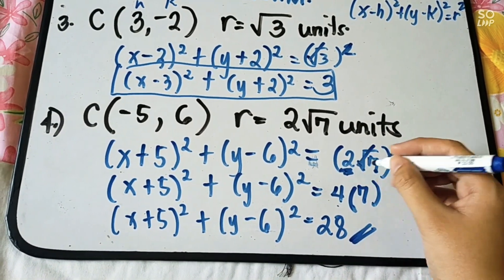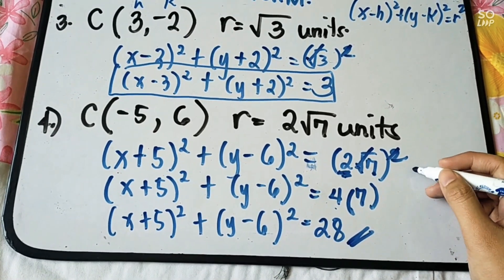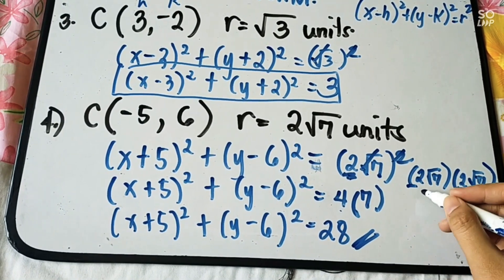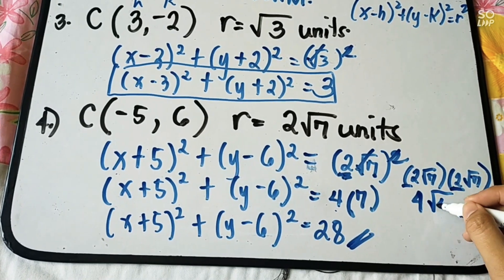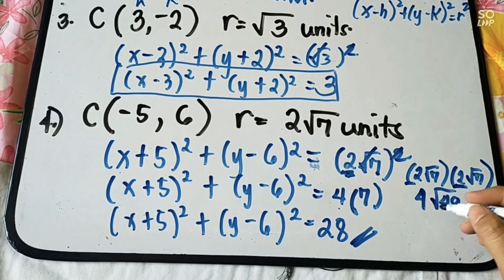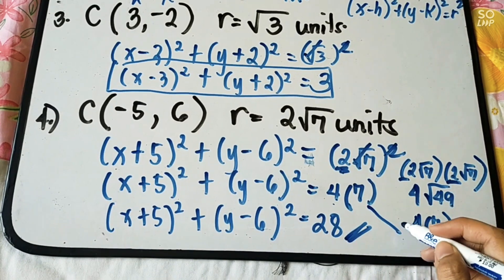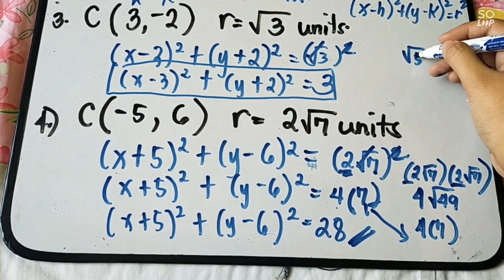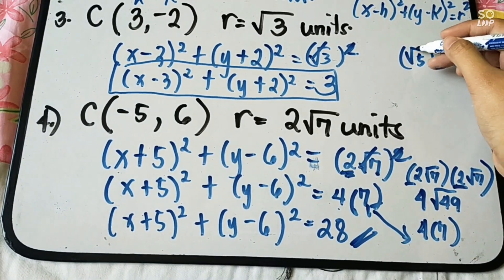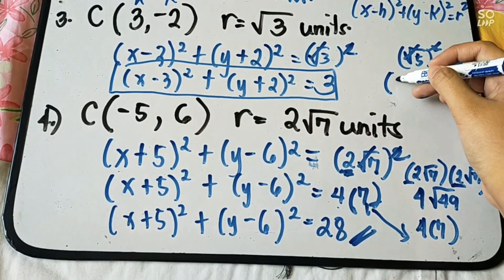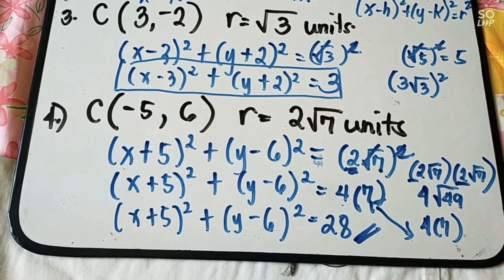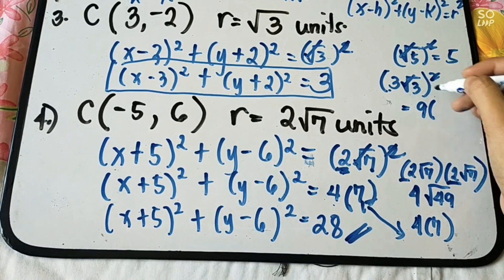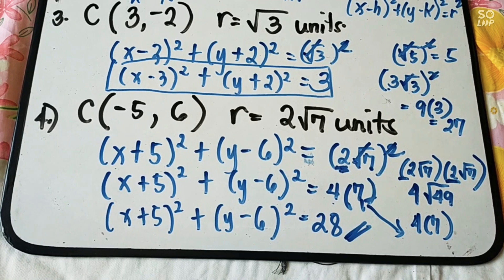To clarify: squaring means multiplying by itself, so (2 square root of 7) times (2 square root of 7) — multiply the outside numbers: 2 times 2 equals 4, and square root of 7 times square root of 7 equals square root of 49, which is 7. So 4 times 7 equals 28. Similarly, (square root of 5) squared equals 5, and (3 square root of 3) squared equals 9 times 3 equals 27.